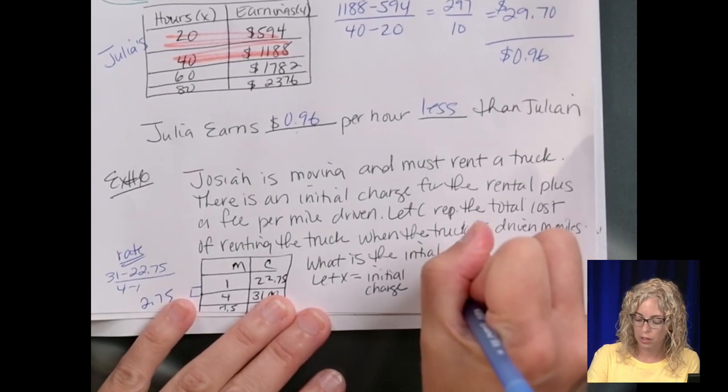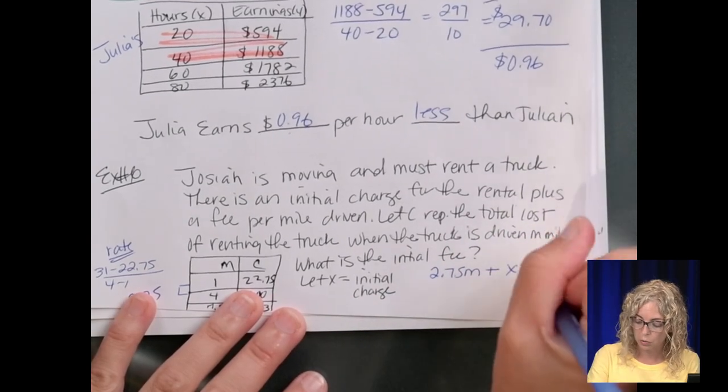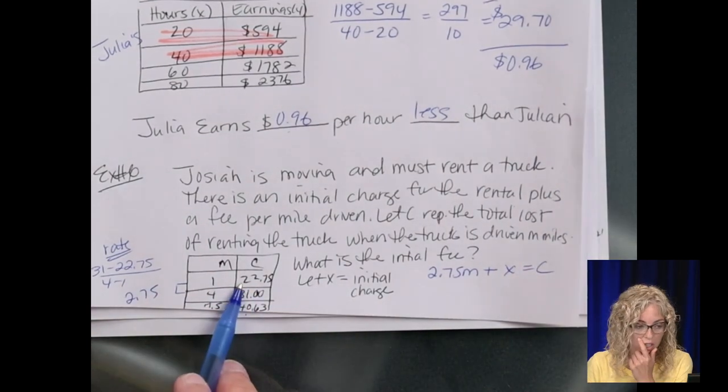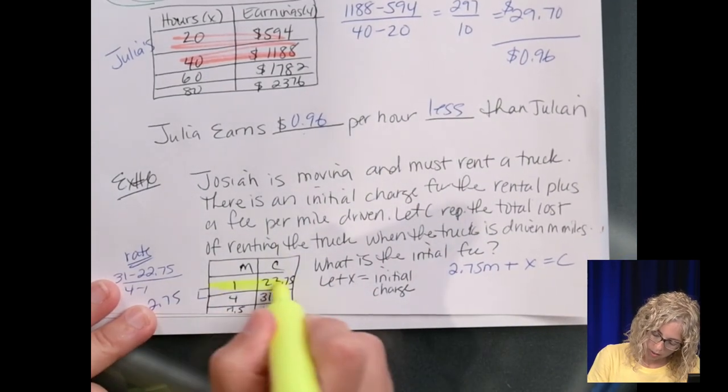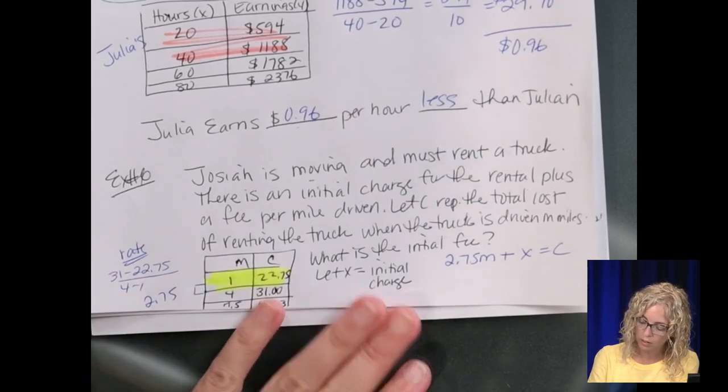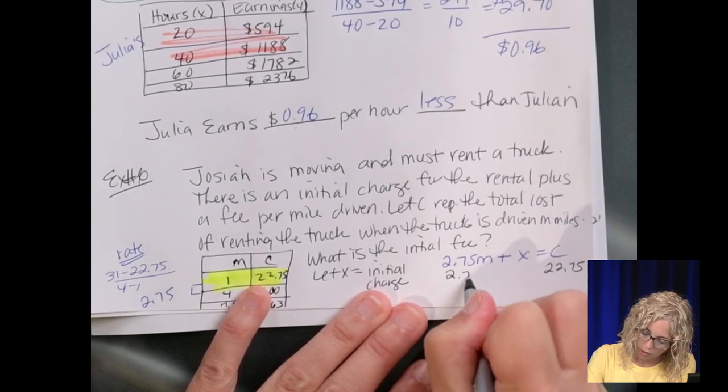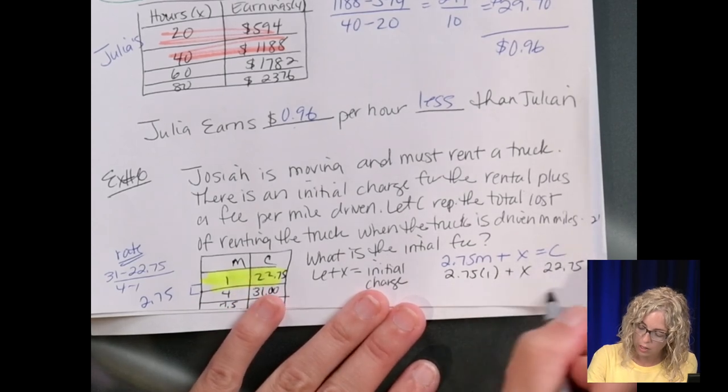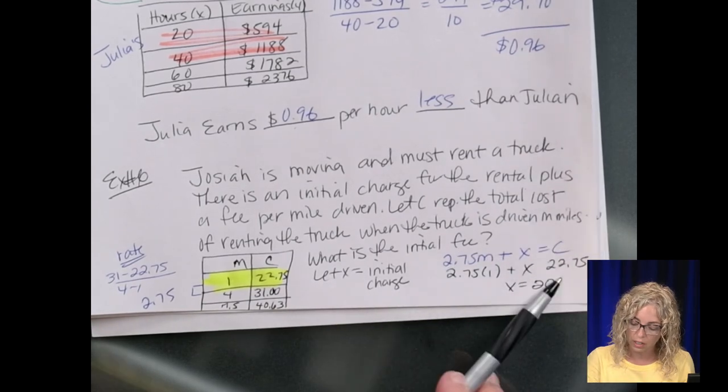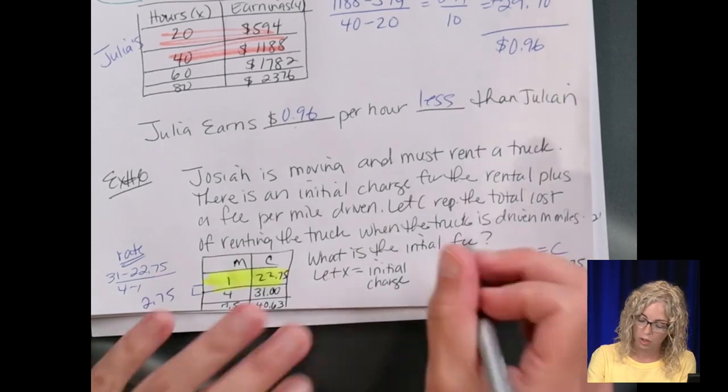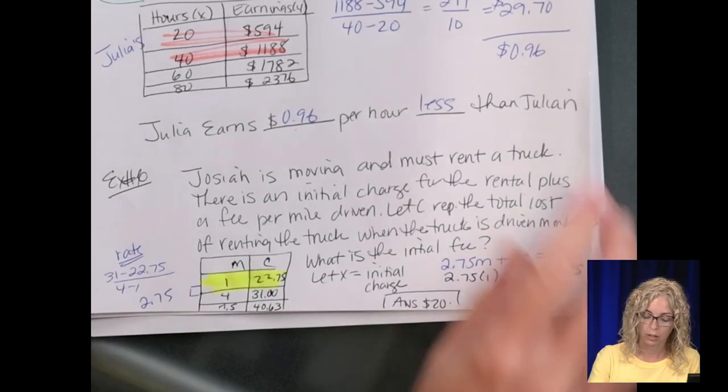So we have the $2.75 per mile plus this initial rate, X, which is going to give us C. So let's just take this point right here. Let's use this M because it's easy to use a one. That M and that C. So if I set the C as $22.75 and then $2.75 times one plus X, which is $2.75, subtract the $2.75, and we get 20. So what is the initial fee to even use the truck to rent it? Our answer is $20.